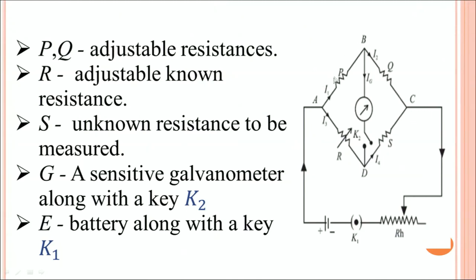Generally, when you perform the experiment, you keep P and Q in a certain ratio, but they are known resistances. Similarly, R is an adjustable, variable known resistance. S is an unknown resistance, the value of which is to be determined. There is a galvanometer connected in the circuit, and keys which can cause the current to flow or not flow. A battery provides a certain voltage and a rheostat controls the amount of current passing through the circuit.